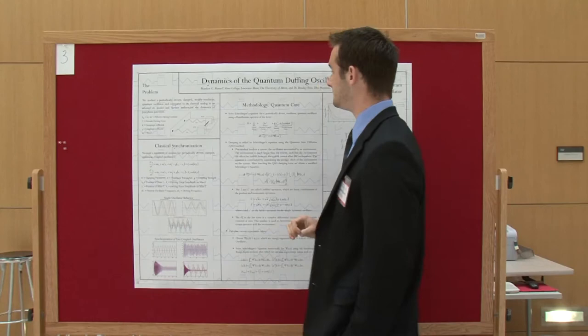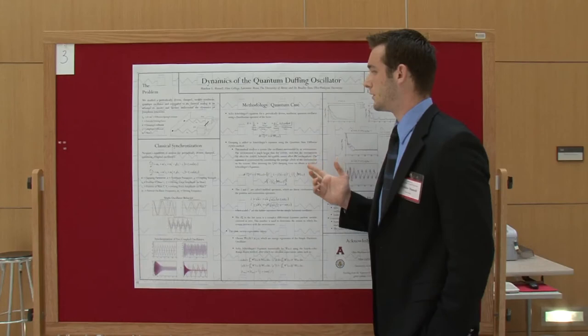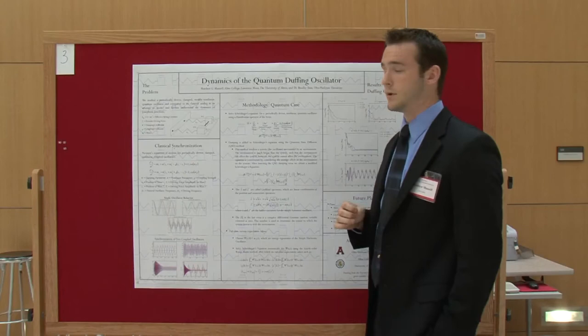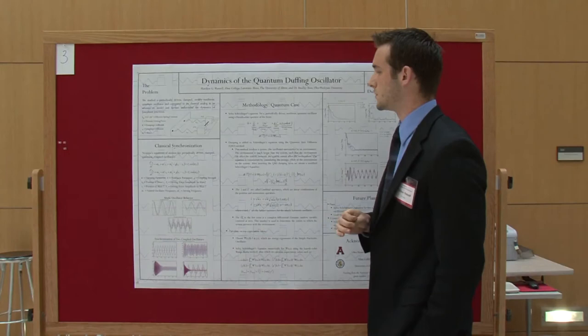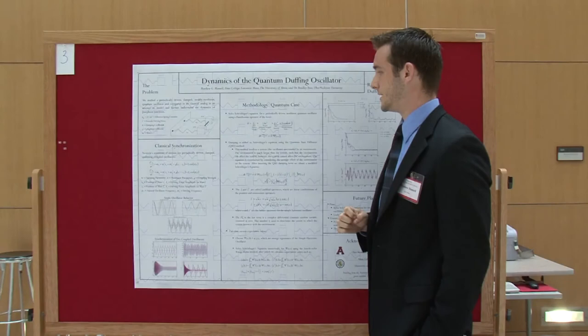When we studied the quantum case we solved Schrodinger's equation for a periodically driven nonlinear quantum oscillator using a Hamiltonian operator of the form h equals p squared over 2m plus one-half kx squared plus epsilon x to the fourth plus f cosine omega t which is basically kinetic energy,